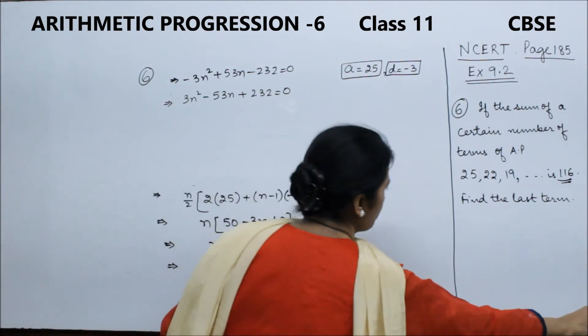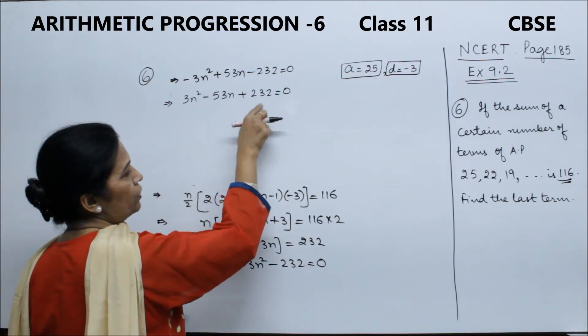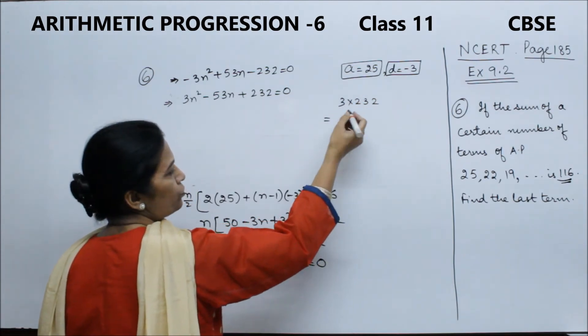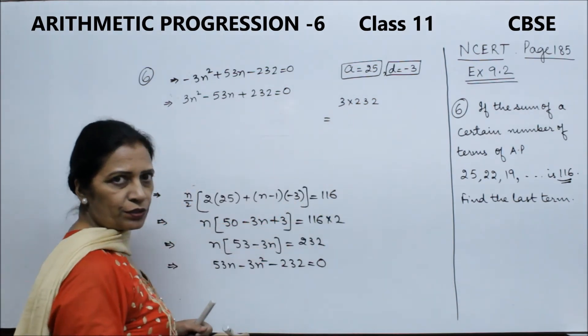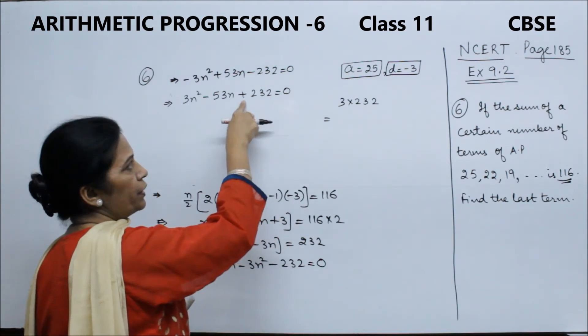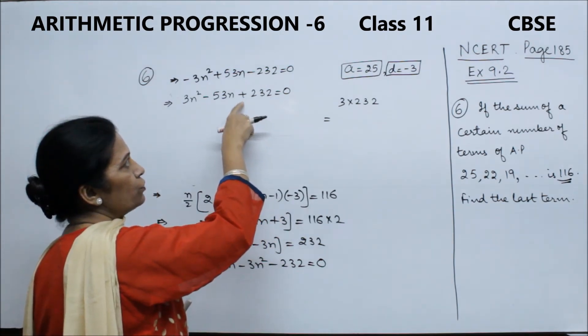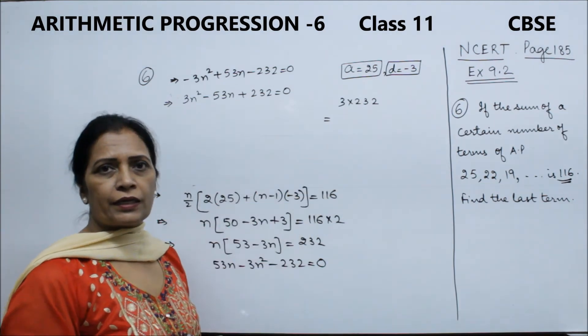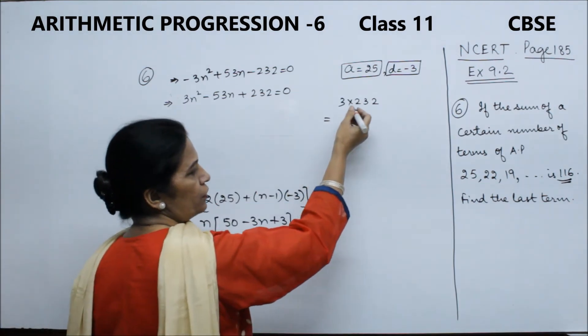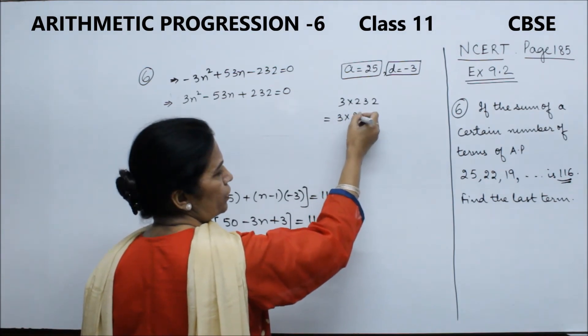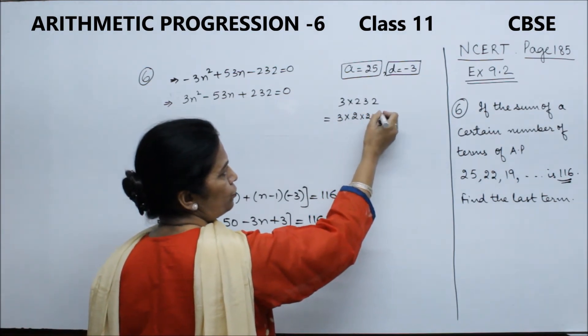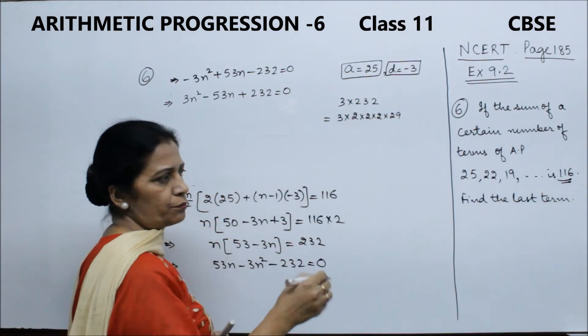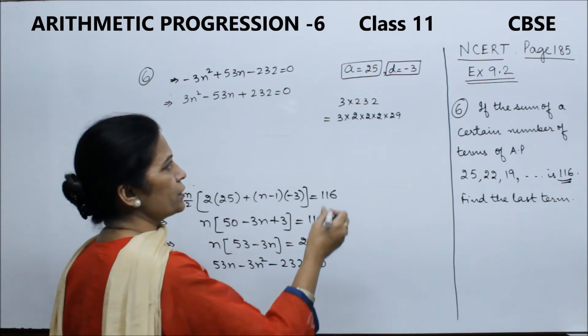Now, middle term split. We multiply 3 times 232 and factorize. This 53 number - that factor when we add. So we factorize: 3, 2, 2, 2, 2, 2, 29.